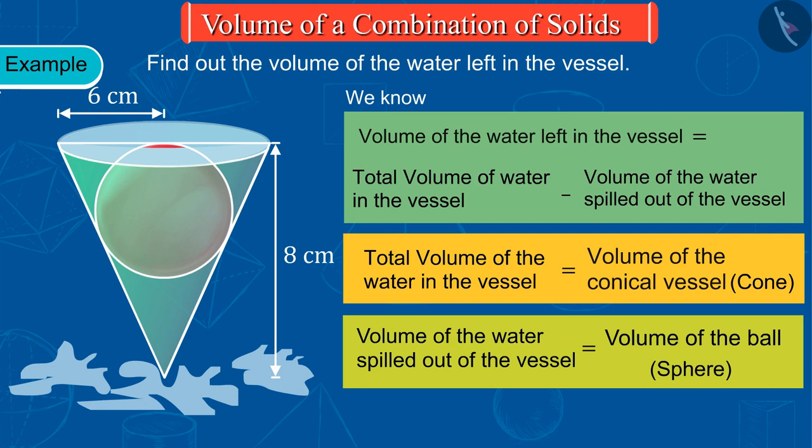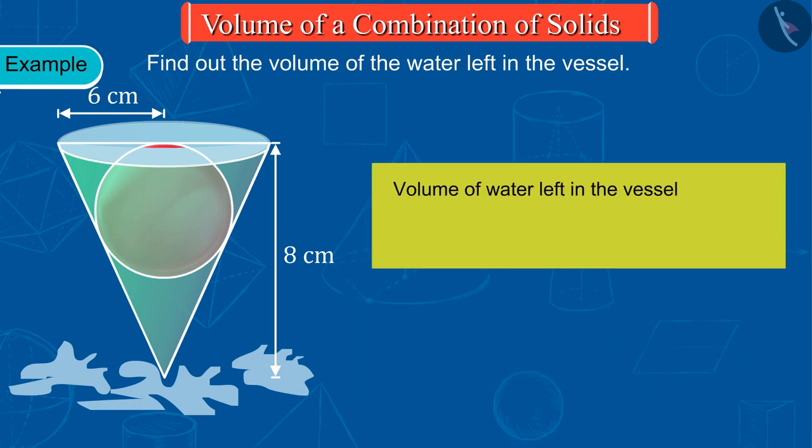Because the ball spills out as much water as space it occupies. So we can say that the volume of water left in the vessel is equal to the difference of the volume of the conical vessel and that of the spherical ball. So now we have to find out the volume of the cone and the sphere.